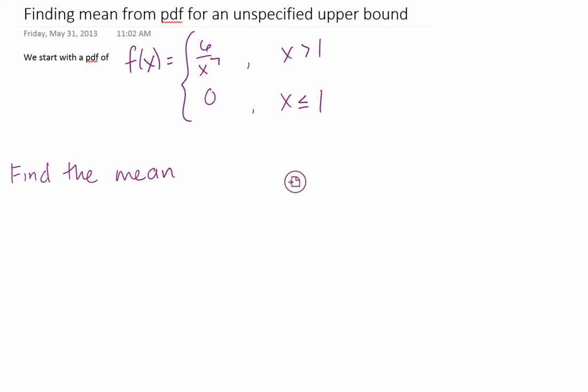So we start this problem, we have the PDF of f(x) equals 6 over x to the 7th for x greater than 1 and 0 for x less than or equal to 1. So our PDF is only defined for x greater than 1.